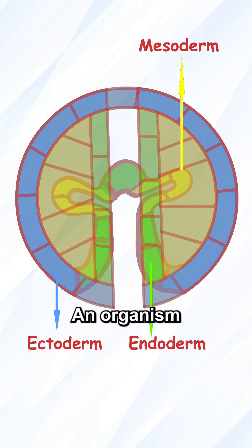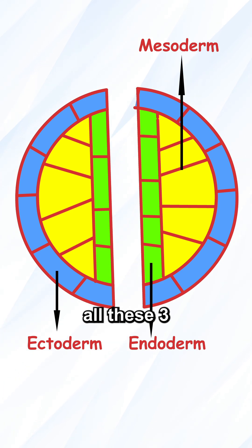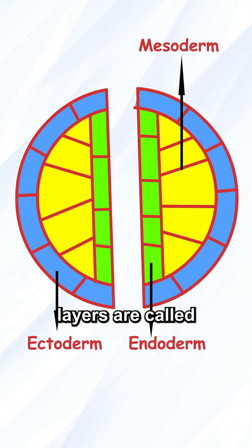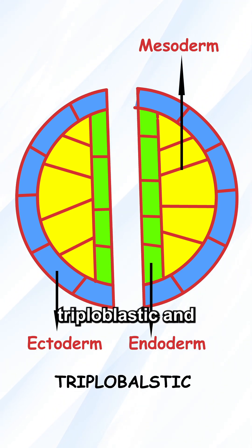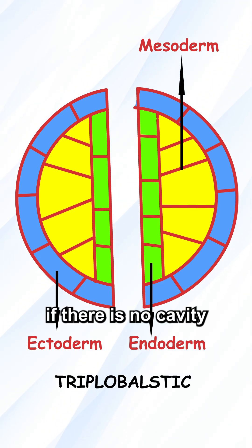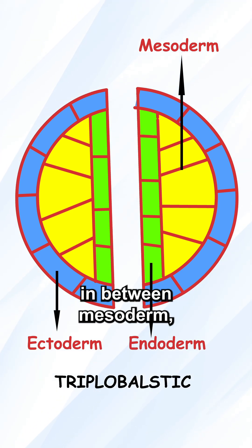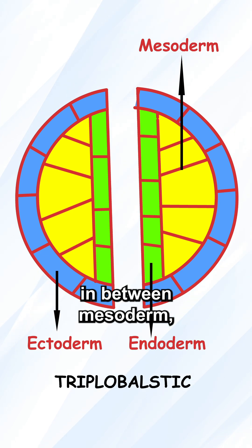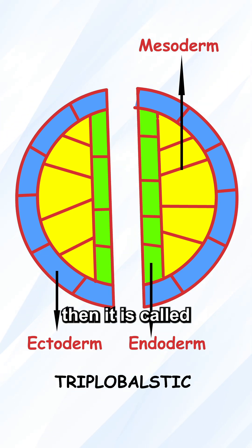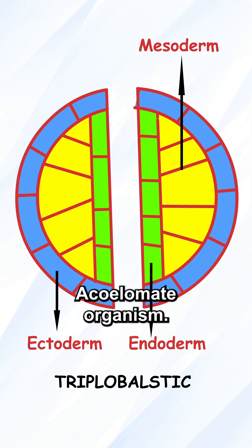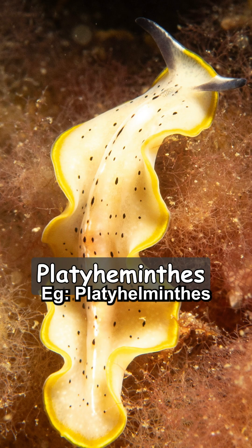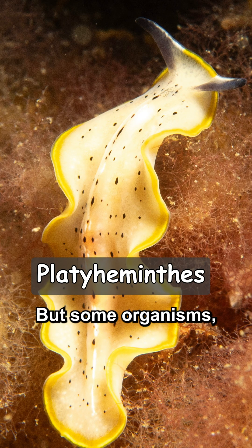An organism which has all these three layers is called a triploblastic organism. And if there is no cavity in between the mesoderm, then it is called an acoelomate organism. Example: Platyhelminthes.